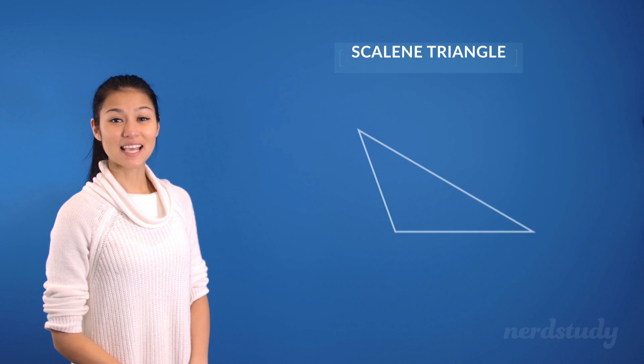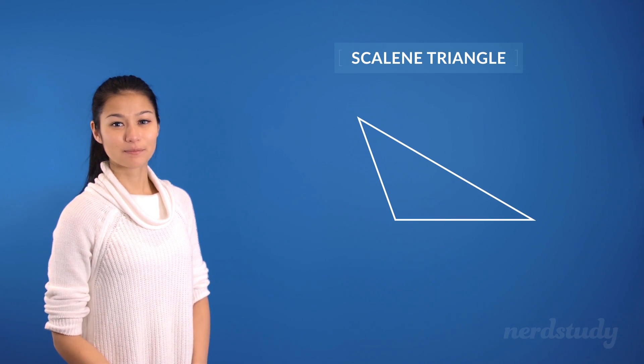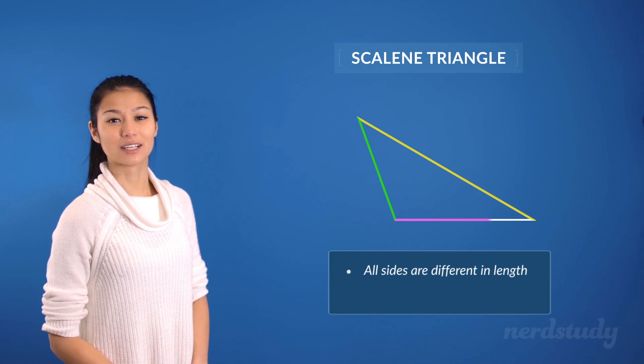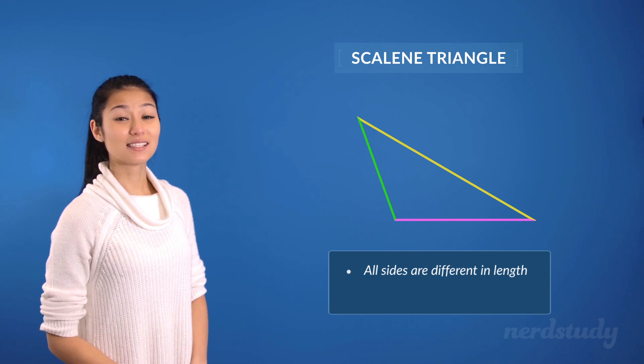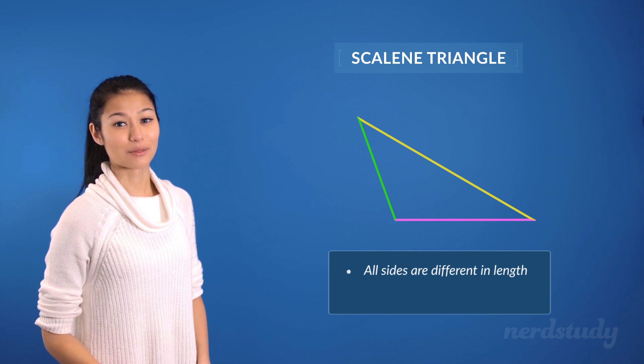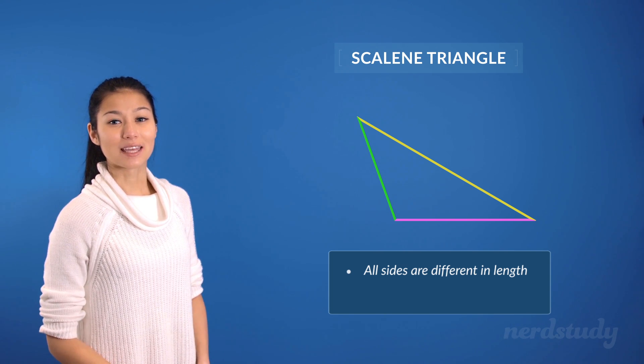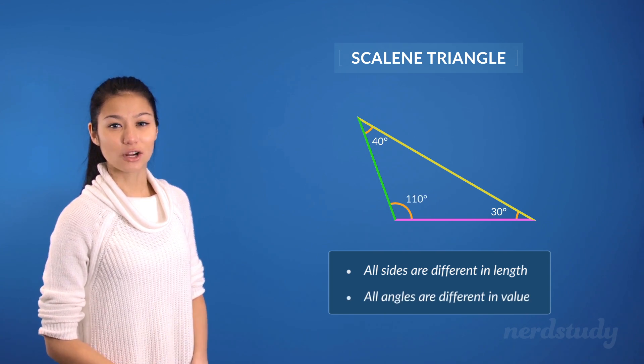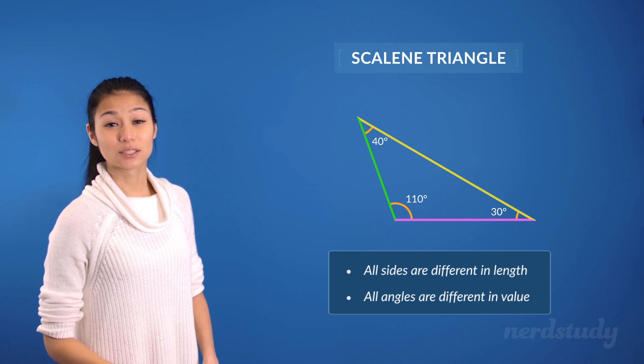A scalene triangle has three sides where each of the sides are different in lengths from each other. Since angles are closely related to the length of a side, which we'll cover in another video down the road, we can also say that the three angles in a scalene triangle are all different as well.